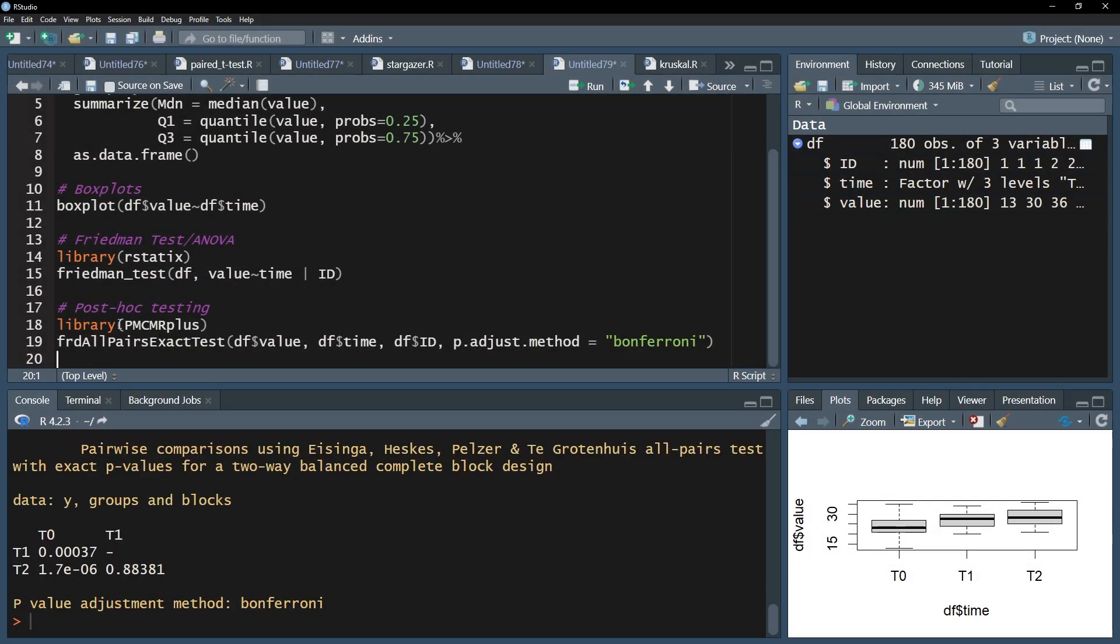Eventually we get a cross table that shows all pairwise comparisons and the adjusted p-values. In my example, I can observe a difference between T0 and T1 with a p-value of 0.00037, and T0 and T2 with a p-value of 1.7 times 10 to the negative 6. This indicates a working intervention, in my case an exercise plan. There's also no further increase or an immediate bounce back since T1 and T2 show no difference worth mentioning.